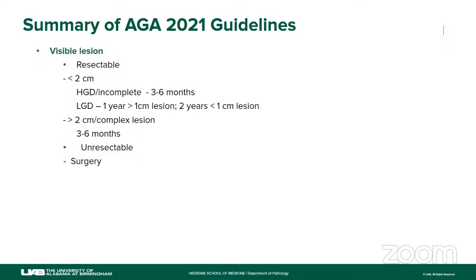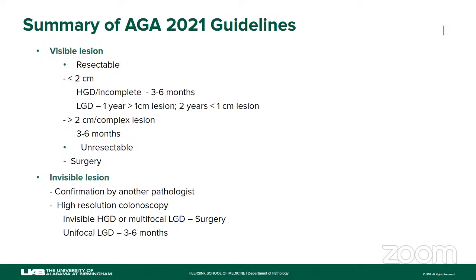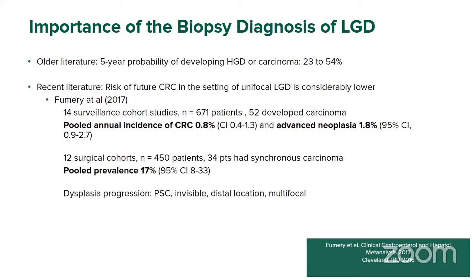To summarize the management again: we divide dysplastic lesions into visible or invisible. If resectable and less than 2 cm with high-grade dysplasia, surveillance is intensive at three to six months. For low-grade dysplasia, depending on size, it's one to two years. For lesions greater than 2 cm or complex lesions, the data is not very clear, and intensive surveillance is recommended. Unresectable lesions go to surgery. For invisible lesions, confirm the diagnosis; if high-grade dysplasia persists — surgery; if multifocal low-grade dysplasia — surgery; if unifocal low-grade dysplasia, surveillance at three to six months.